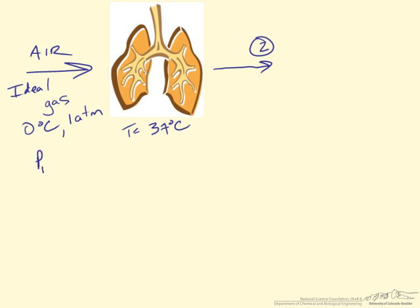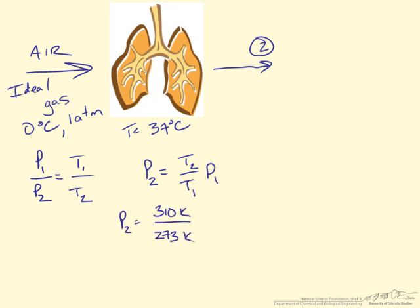So let's use that exact relationship that we just set up before. P1 over P2 equals T1 over T2. So our P2 is going to be equal to T2 over T1 times P1. Using the new values that we have, 310 kelvin, this time over 273 kelvin again times the 1 atm. What we are going to see this time is that the pressure is going to be 1.135 atm. So at colder temperatures it actually increases the pressure in our lungs once it reaches equilibrium in our body.